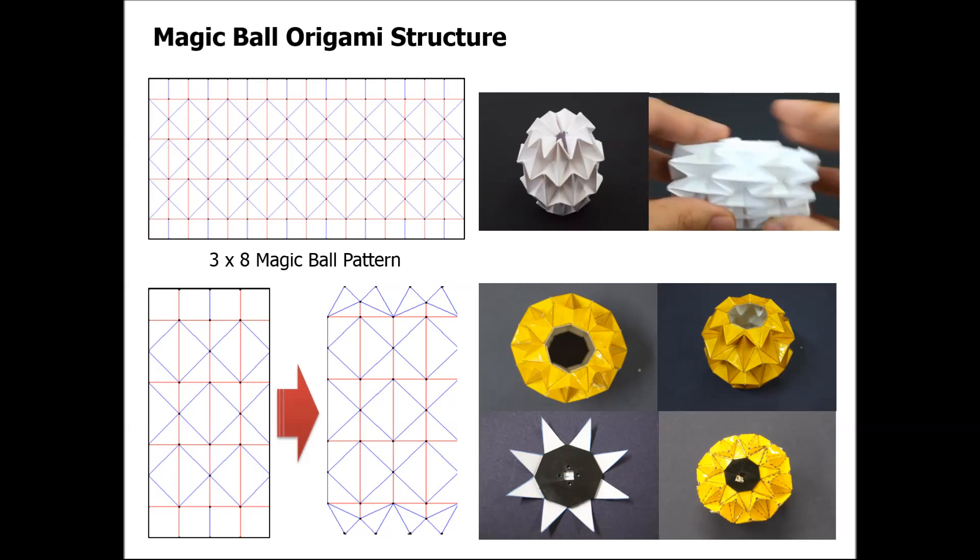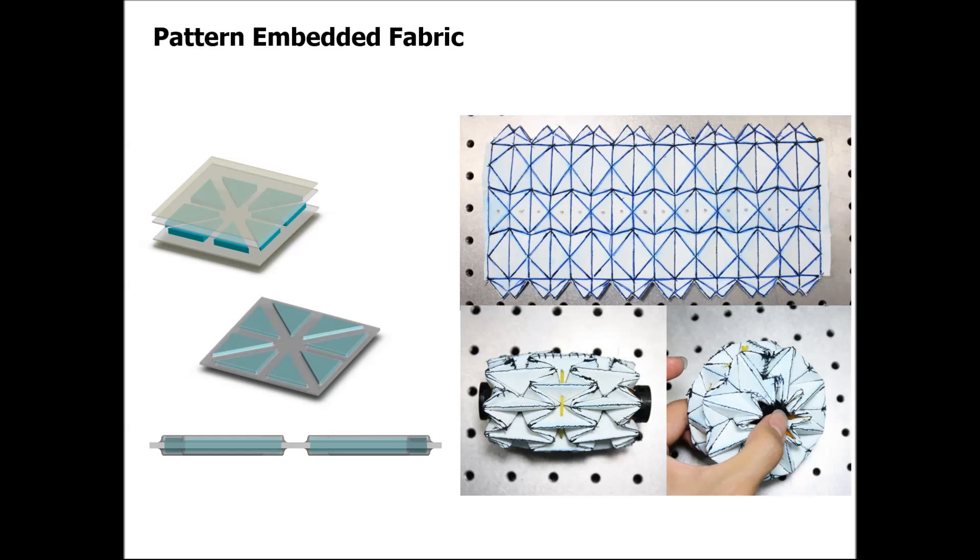First, in fabrication of the wheel, we designed pattern-embedded fabric for making a robust but foldable structure. This structure is composed of fabric, adhesive layer, and PVC segments.